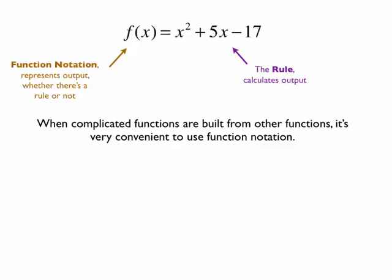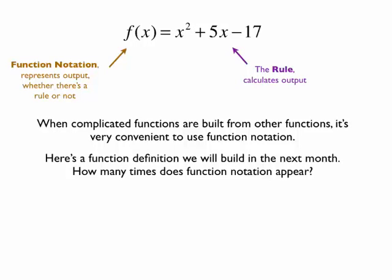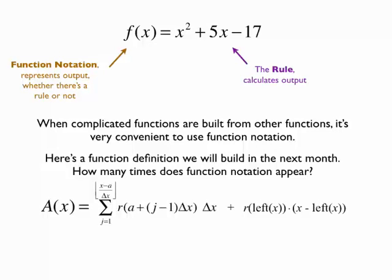Here's a definition we're going to build over the next month. Count how many times function notation appears in it. It's a lot more than once. Notice: j is a number, not the name of a function. x is the input. Delta x is a number, not the name of a function.